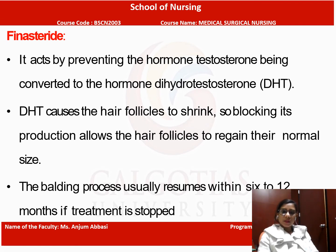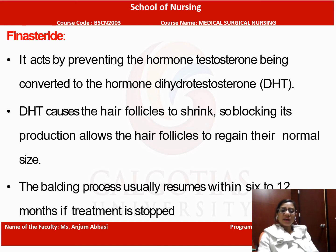One medicine acts by preventing the hormone testosterone from being converted to the hormone dihydrotestosterone, or DHT. DHT causes the hair follicles to shrink, so blocking its production allows the hair follicles to regain their normal size. The balding process usually resumes within 6 to 12 months if treatment is stopped.